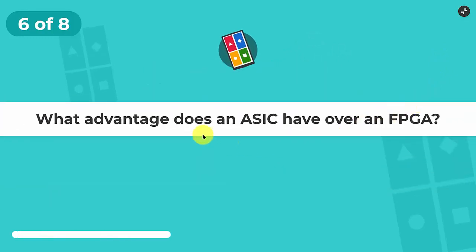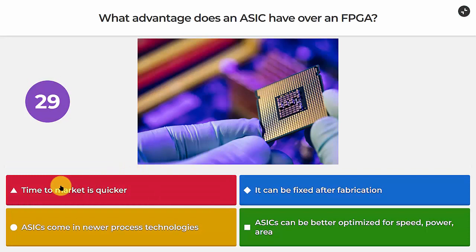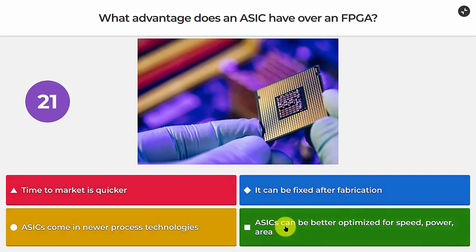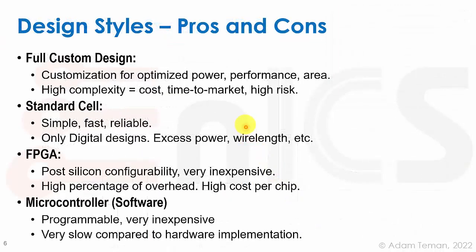Question six: what advantage does an ASIC have over an FPGA? Is its time to market quicker? Can it be fixed after fabrication? Do ASICs come in newer process technologies? Or can ASICs be better optimized for speed, power, and area? The correct answer — the only real advantage — is that ASICs can be better optimized for speed, power, and area.